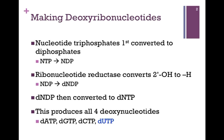To form deoxyribonucleotides, the triphosphates are first converted to diphosphate form — in other words, they are dephosphorylated. An enzyme known as ribonucleotide reductase then takes the ribonucleotide diphosphate and converts the 2' OH to a deoxy form, producing a deoxynucleotide diphosphate.